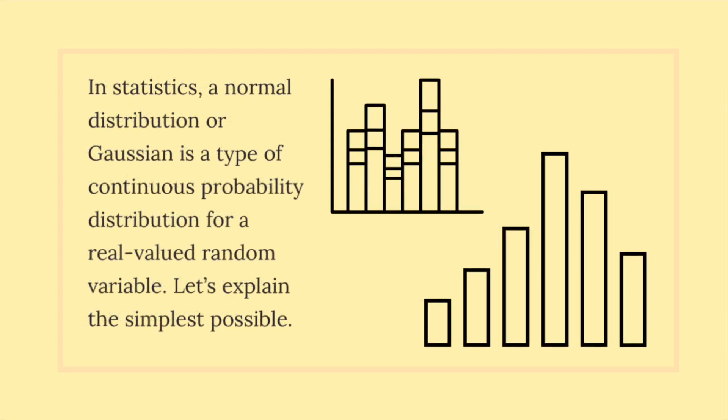In statistics, a normal distribution or Gaussian is a type of continuous probability distribution for a real valued random variable. Let's explain the simplest possible.